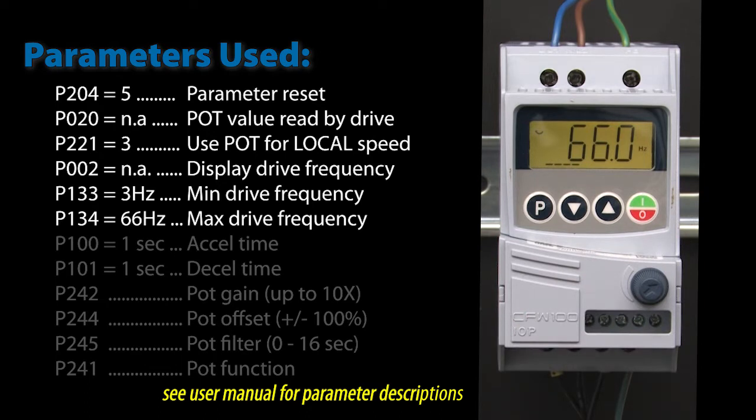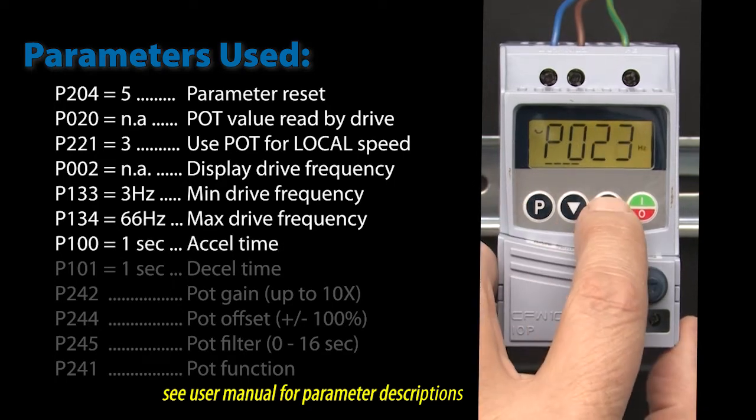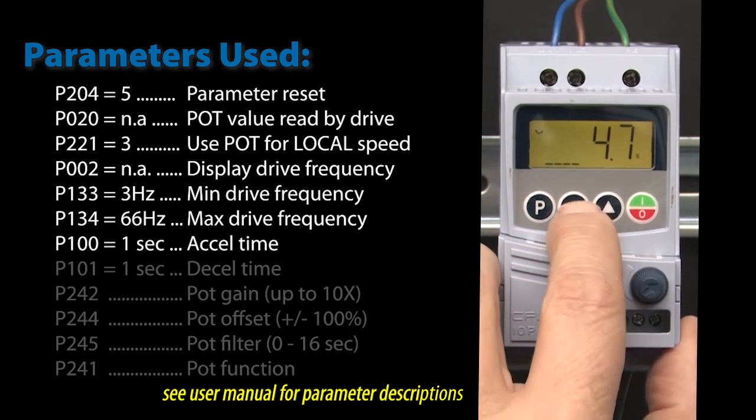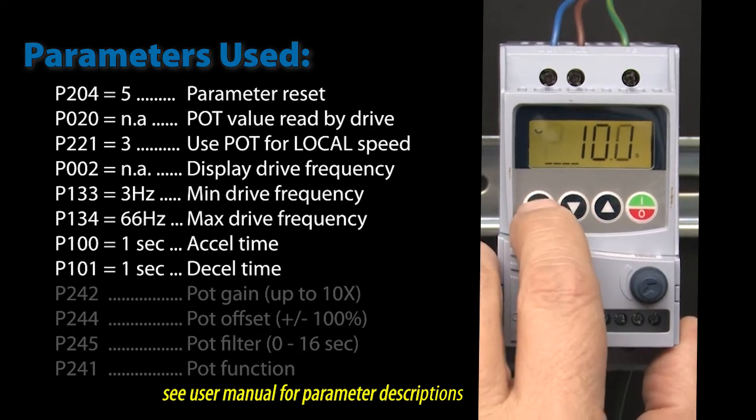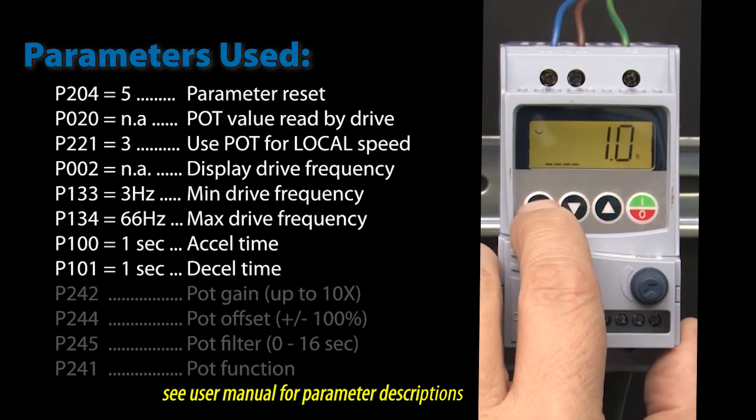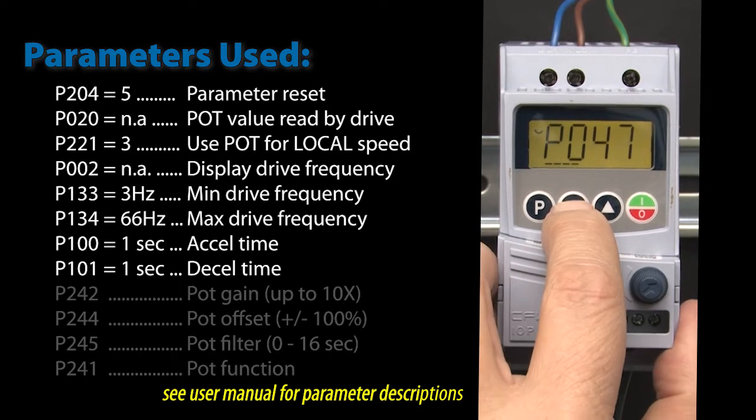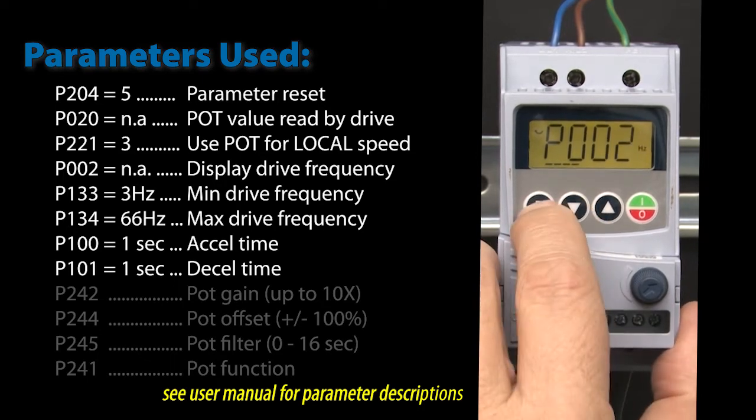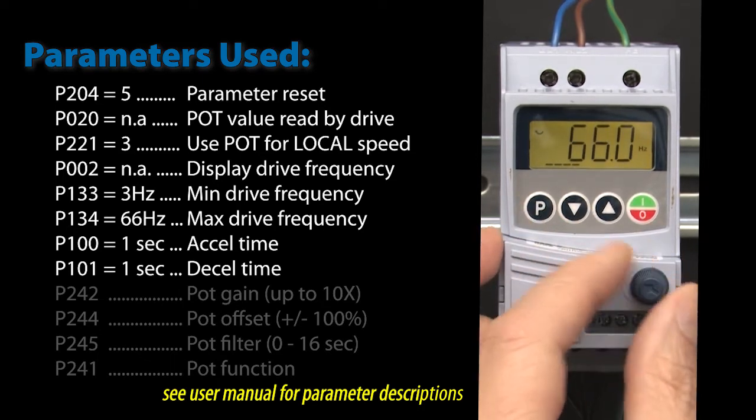It took a little while to get to speed which makes it feel lethargic when I turn the knob. So let's go to parameter 100 and change the acceleration to 1 second and parameter 101 to change the deceleration to 1 second. And I'll go back to parameter 2 so we can see the drive's frequency. Now if we turn the potentiometer, the motor is much more responsive. Perfect.